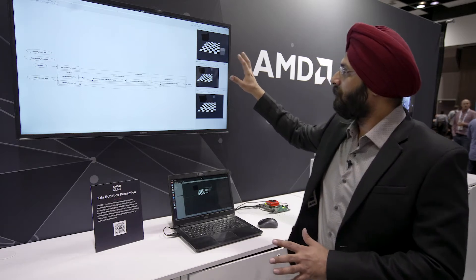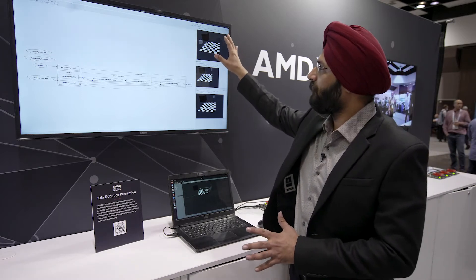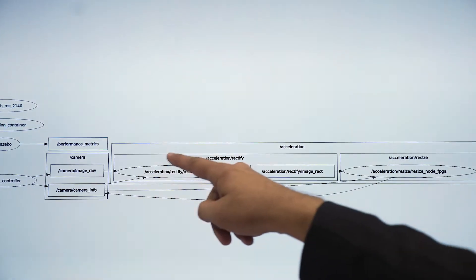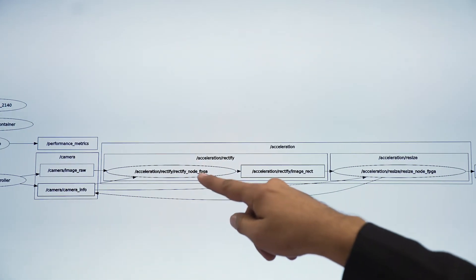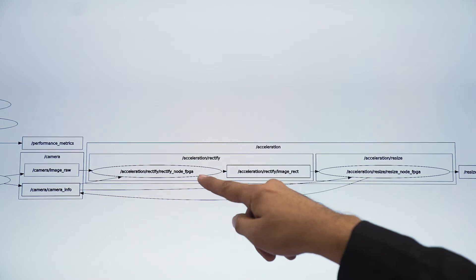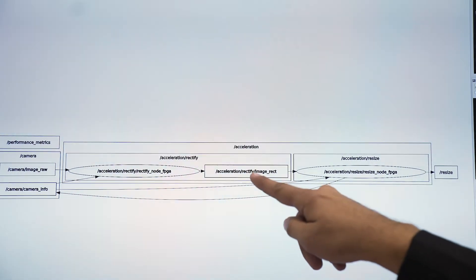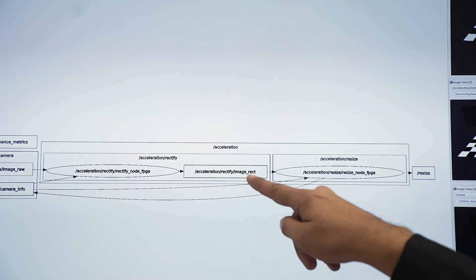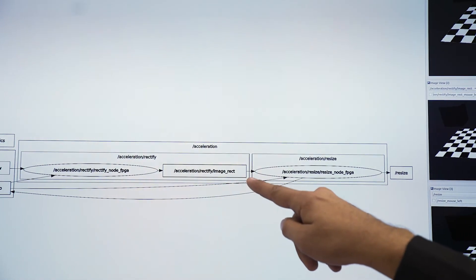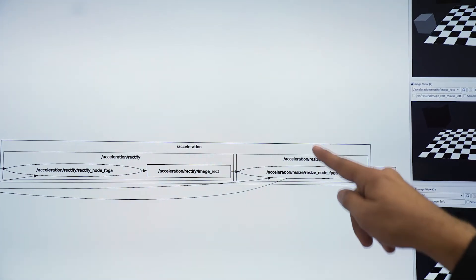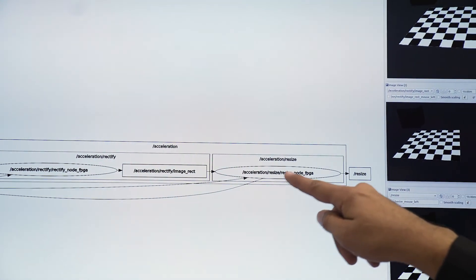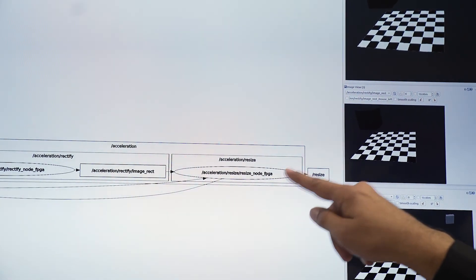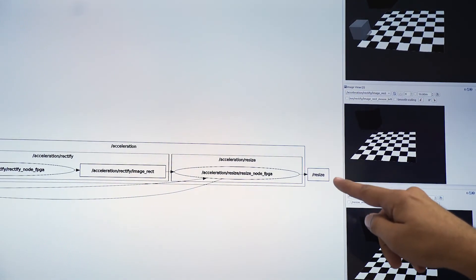This raw image feed is going to our rectify node FPGA, which is being processed on our fabric. Then this is giving output to our resize node, which resizes the image, and we are getting the final output.